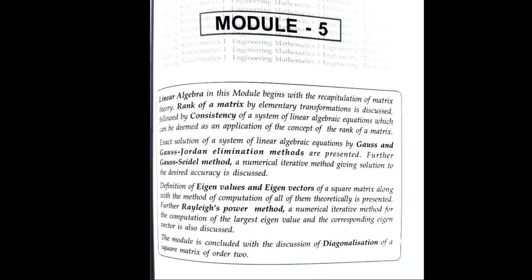Model 5 covers rank of a matrix, Gauss and Gauss-Jordan elimination methods, Gauss-Seidel method, eigenvalues and eigenvectors. If you have to calculate eigenvalues and eigenvectors, due to time constraints I am sorry — but you can search on YouTube for eigenvalues calculator. It will be very useful. In the calculator, the answer is easy to find for eigenvalues.